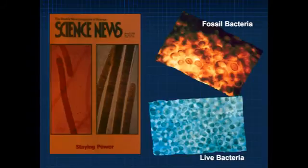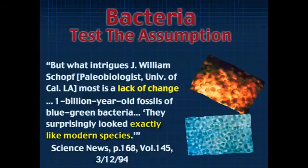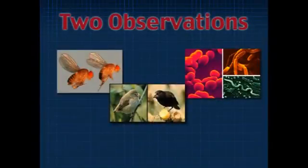This was really emphasized in an article from Science News comparing fossil bacteria with live bacteria — virtually identical, except the fossil bacteria is a little bigger. Paleobiologist William Schopf at UCLA says what intrigues him most is a lack of change: one-billion-year-old fossil blue-green bacteria surprisingly looked exactly like modern species. You cannot observe the changes because it takes millions of years — but here is millions of years of something that reproduces every twenty minutes, and there is nothing. Not only like modern kinds, but exactly like modern species.